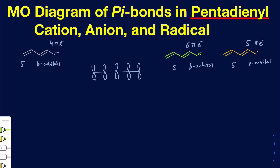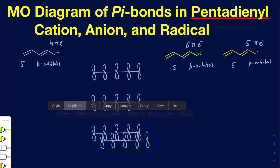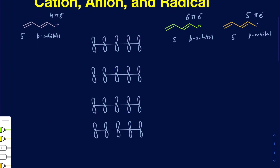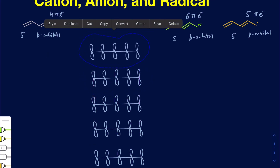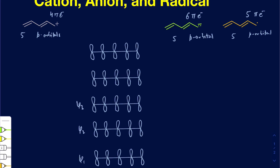Let's talk about having those five different sets of molecular orbitals. I'm going to draw these five different sets out. They're going to have their energy increasing as you move up. I can call these ψ1, ψ2, ψ3, ψ4, and ψ5. The set and arrangement is going to be the same whether you have a cation, anion, or radical — it's only going to differ in how many electrons you eventually have in those molecular orbitals.